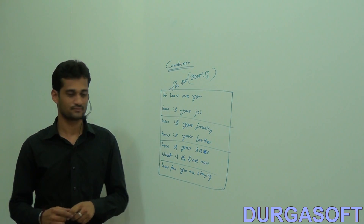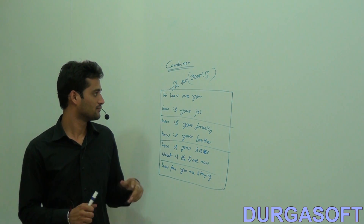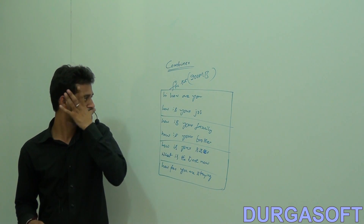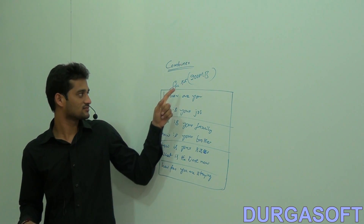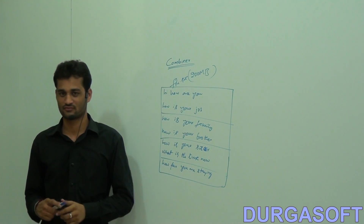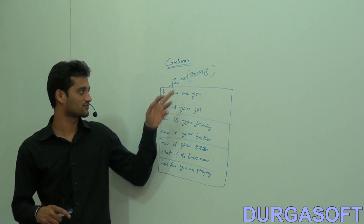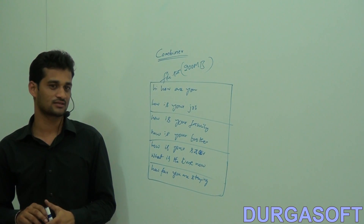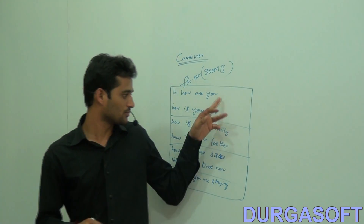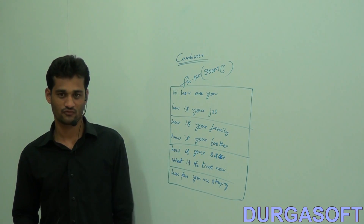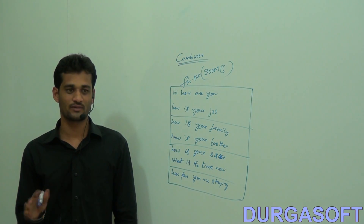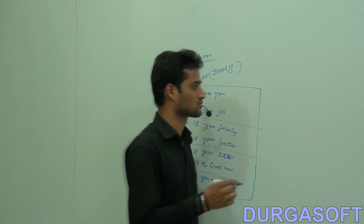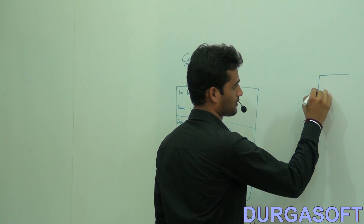The next concept is combiner. Consider a small file — let's say it's 200 MB in size and the file name is file.txt. How many input splits are there? Four. So how many mappers will be working? Four mappers.